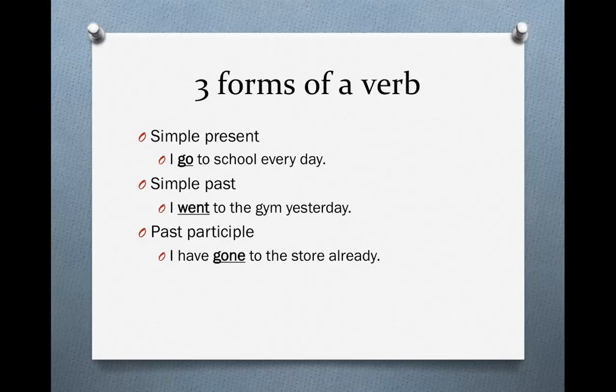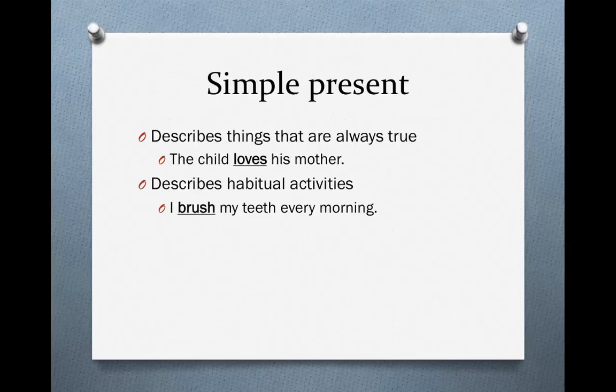First let's go over the three main forms of a verb. There's the simple present form: I go to school every day. If the subject was third person, it would be he goes to school every day, with an -es. There's the simple past form: I went to the gym yesterday. And the past participle form: I have gone to the store already. Right now we're going to be talking about the simple present form.